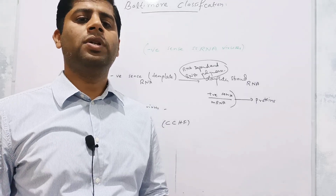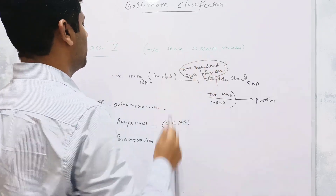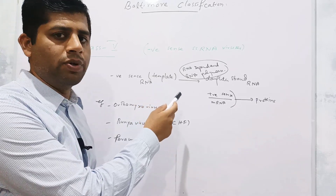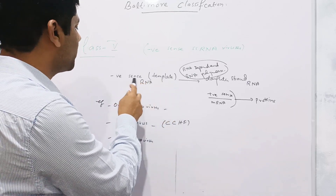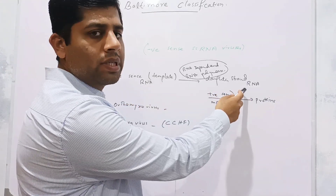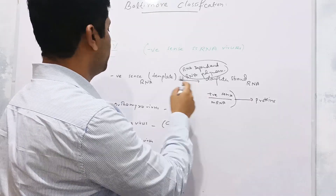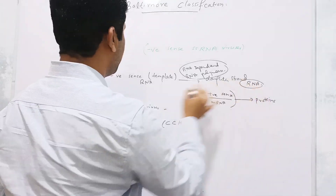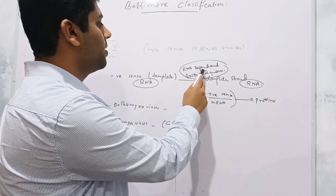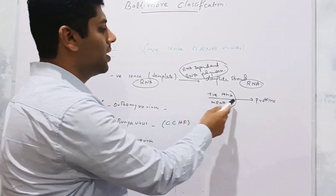The fifth class comprises viruses with a genome of negative-sense single-stranded RNA. As stated earlier, negative-sense RNA is complementary to messenger RNA and cannot be directly translated into proteins. Therefore, this negative-sense strand serves as a template and synthesizes a complementary strand of RNA that resembles messenger RNA — that is, positive-sense RNA. The enzyme used here is RNA-dependent RNA polymerase, which converts the negative-sense RNA into positive-sense RNA that can be translated into proteins.